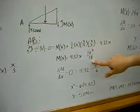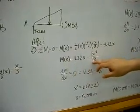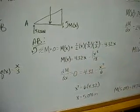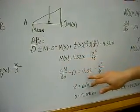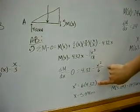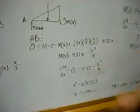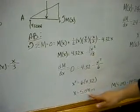Simplifying, we get this, and we need to take the derivative, which will maximize our moment at a given value of X. Taking the derivative and simplifying, we get X squared equals 6 times 4.32. Solving for X, we get a value of 5.091 meters.